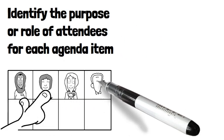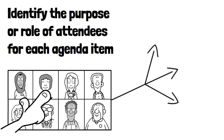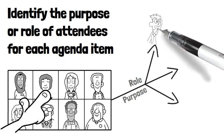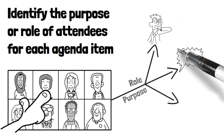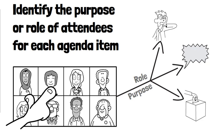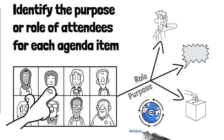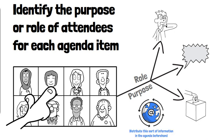Fifth, identify the purpose or role of attendees for each agenda item. It can be difficult for attendees to make meaningful contributions if they're unsure of their role — such as whether they should just be listening, giving their opinion or being part of decision-making. If individuals think they have a say in decision-making when you just want their input, everyone is likely to be disappointed by the end of the meeting. To prevent this confusion, distribute this information in the agenda beforehand, and state how and by whom the decision will be made.